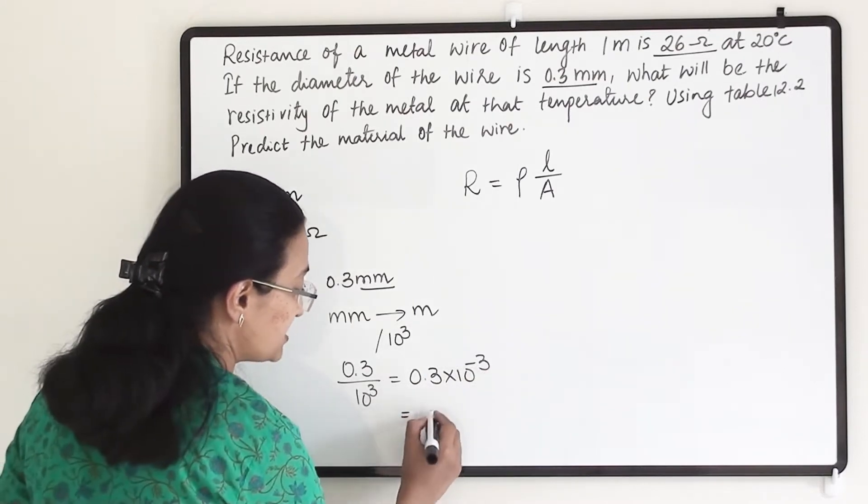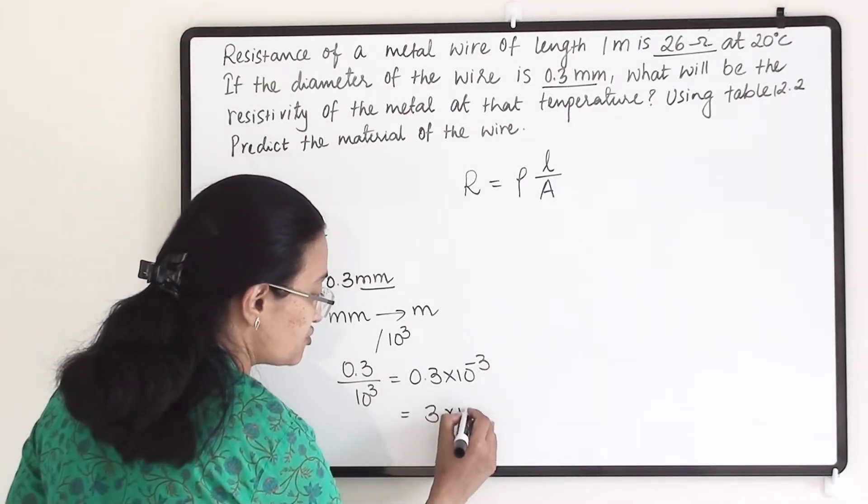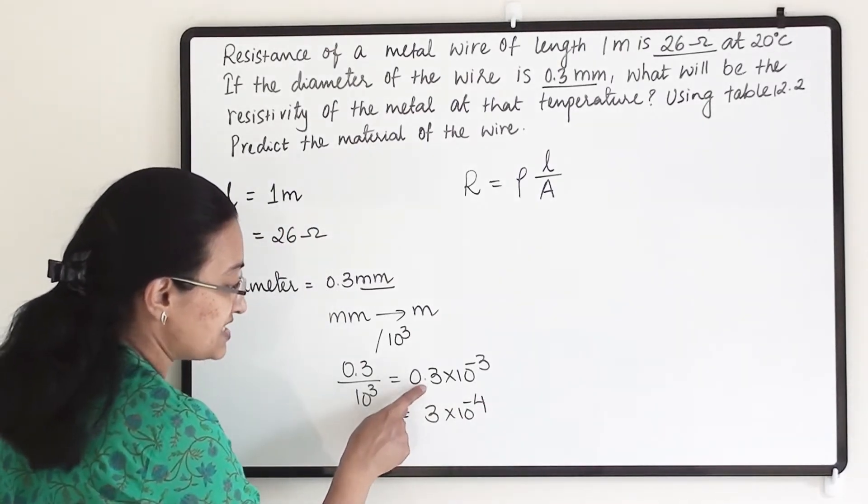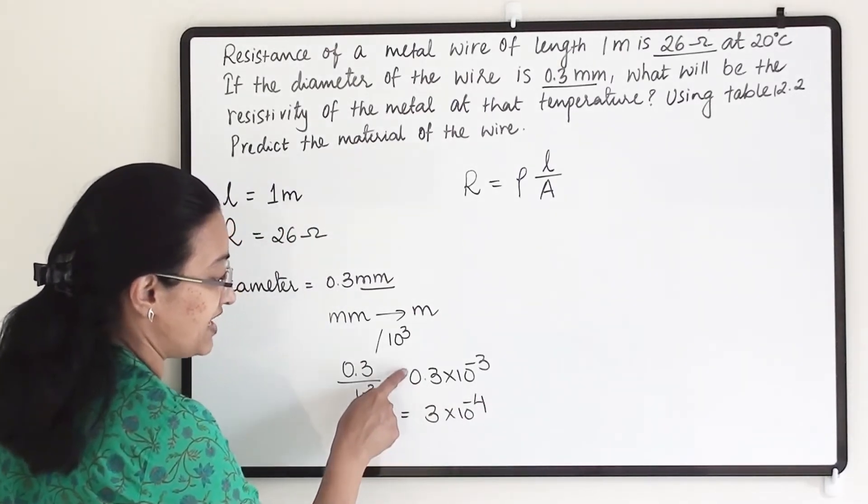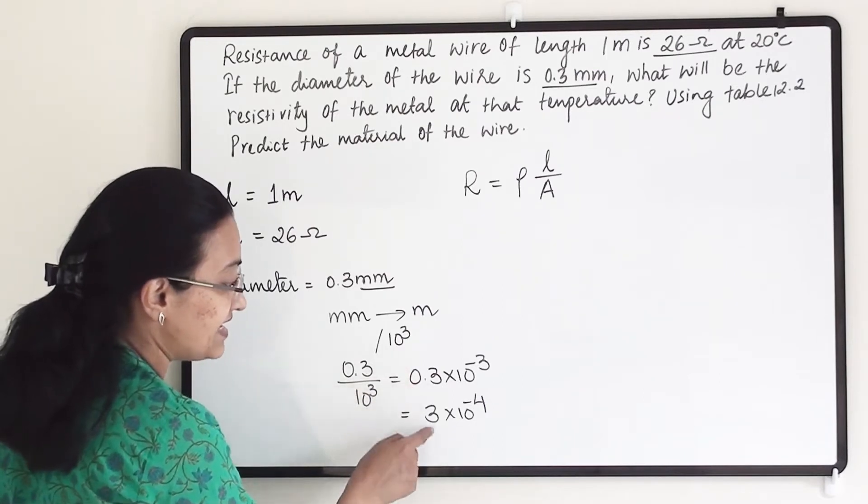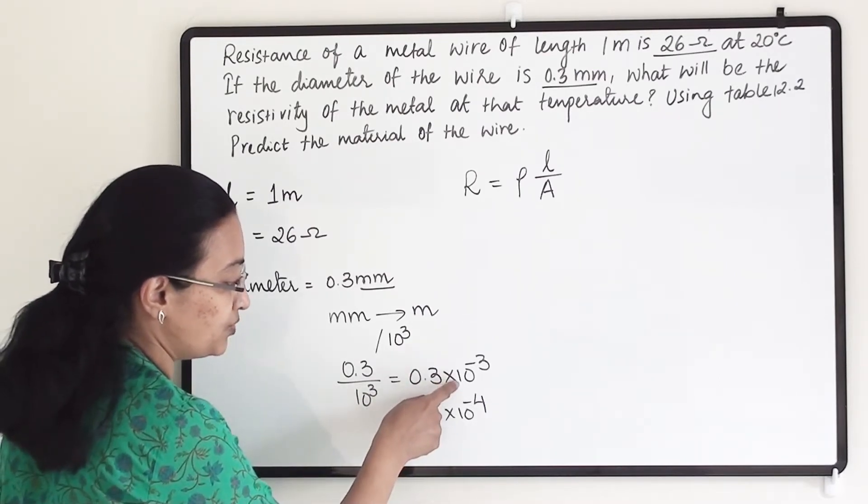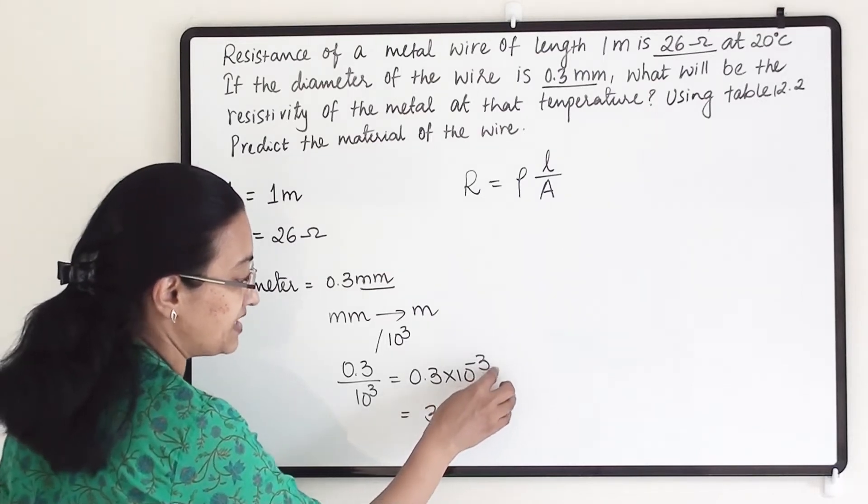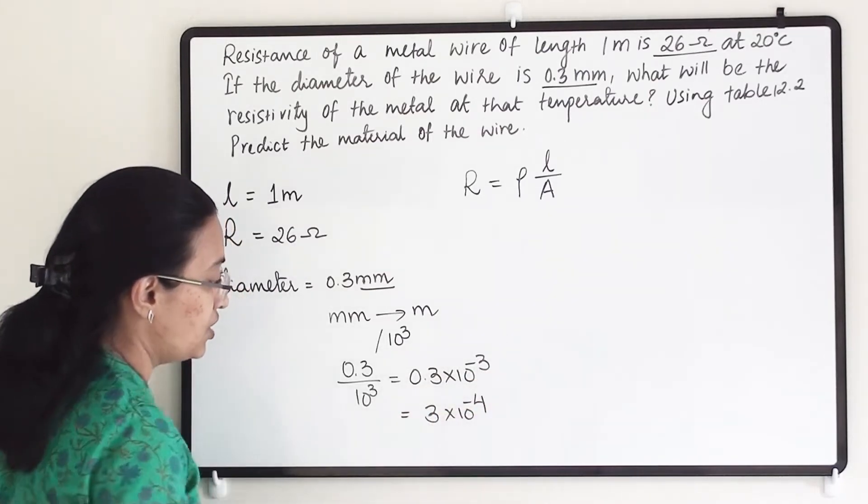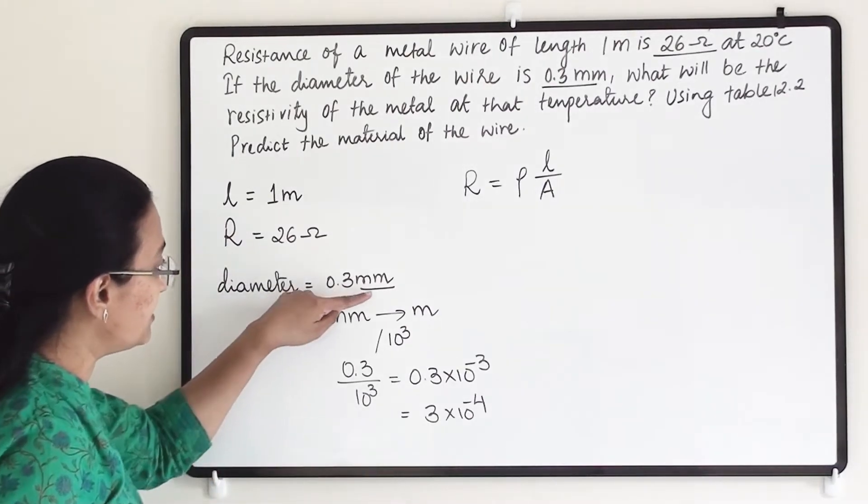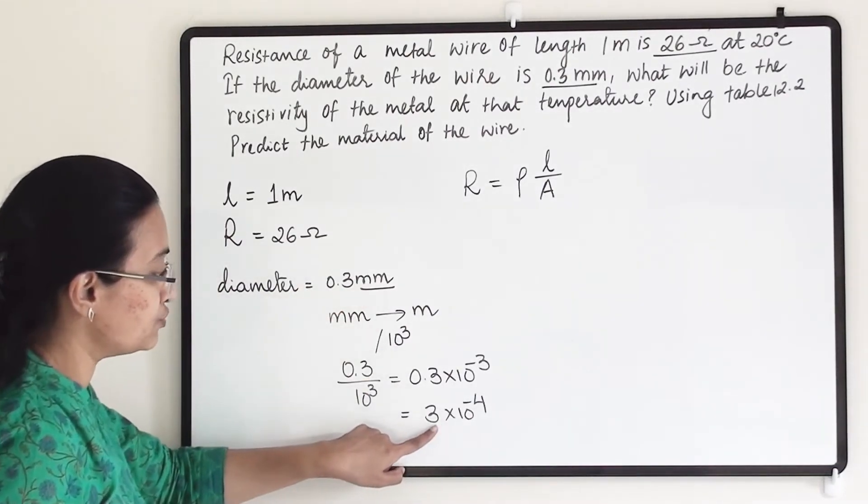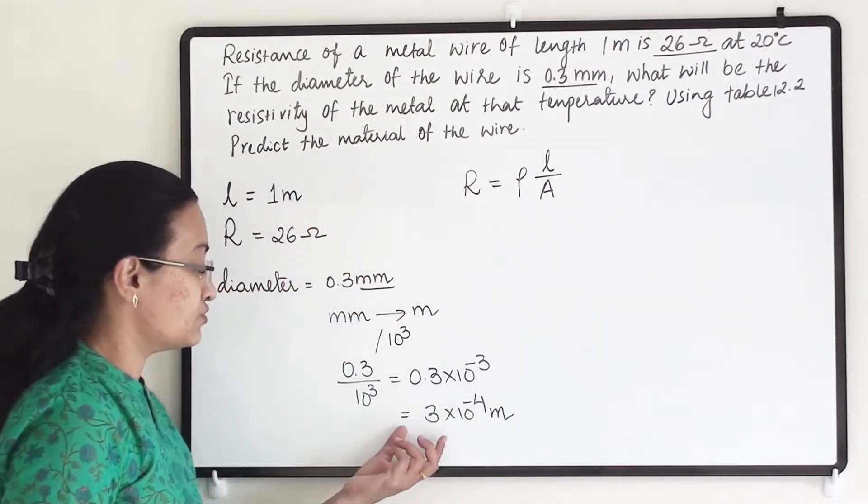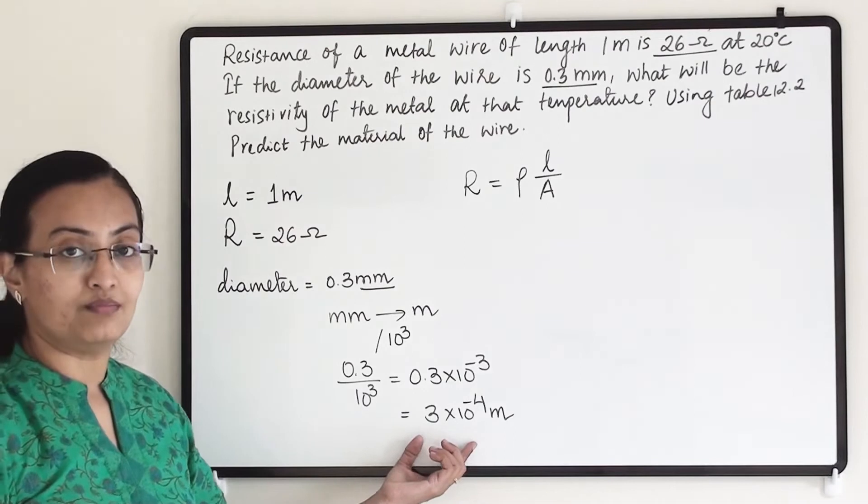I can also write 3 into 10 raise to minus 4 because this is in decimal. Once I convert it into fraction I get 3 by 10. That 10 in the numerator adds to minus 3. Minus 3 minus 1 gives minus 4. So 0.3 millimeter converts to 3 into 10 raise to minus 4 meter. This is our new diameter.